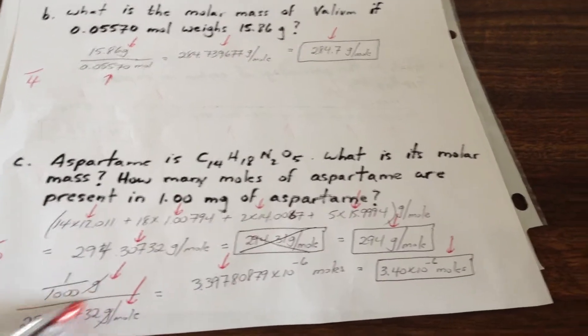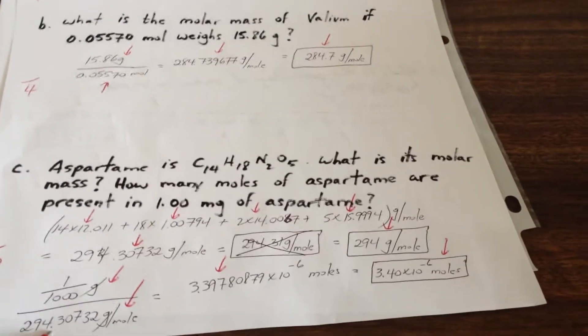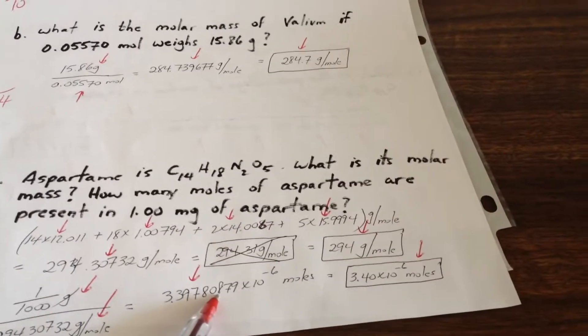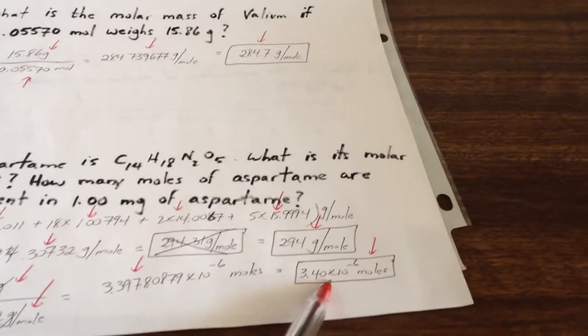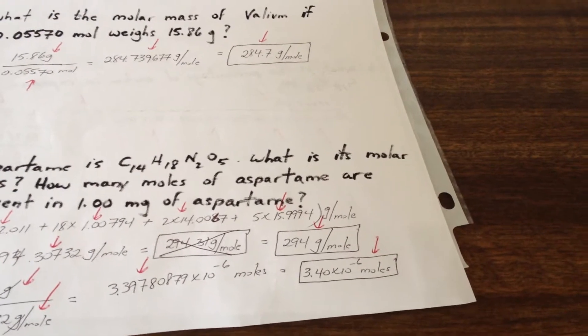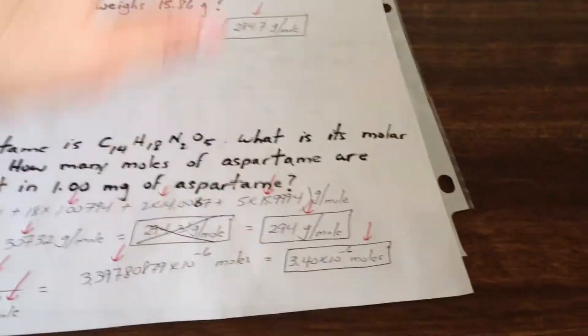One one-thousandth of a gram represents one milligram. Divide by the molar mass gives you how many moles. And then we report the answer to three significant figures. 3.40 times 10 to the minus 6 moles of aspartame.